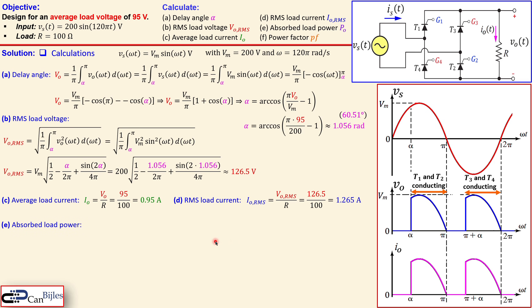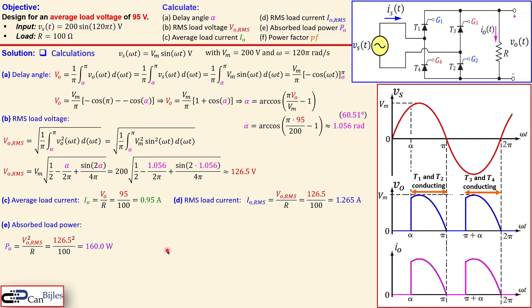The next quantity is the absorbed load power, which is the real power dissipated in the load resistor. We calculate it using RMS load current squared times R, or equivalently RMS load voltage squared divided by R. Both give the same result: approximately 160 watts.